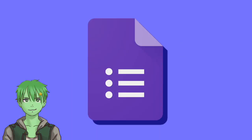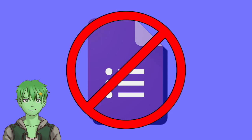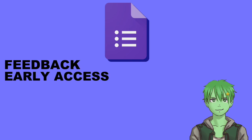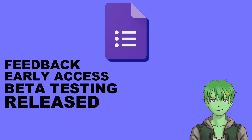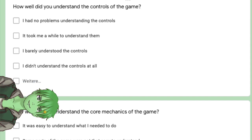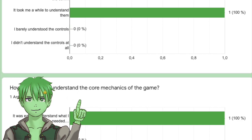Number 4: Google Forms. Just like itch.io, Google Forms isn't a tool designed to make video games, but it's a great and free way to get feedback. Whether your game is in early access, beta or has officially released, you can find out what your audience thinks of your game — whether the controls are easy enough to understand, gather general feedback or just provide a way to report bugs. With its different options, people can write a short text or answer multiple choice questions.